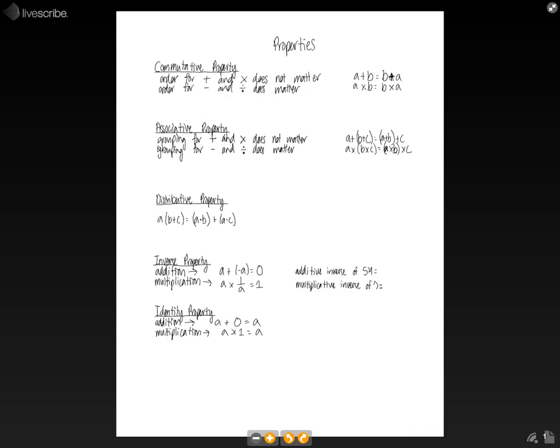In this lesson we're going to talk about the different number properties. So the first one that we're going to go over is the commutative property, which states that the order for addition and multiplication does not matter. And so if we look at the general equations for this, this would be like a plus b is the same as b plus a.